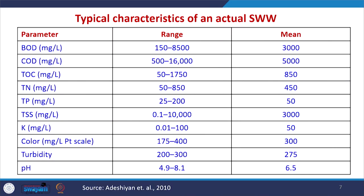The typical characteristics of slaughterhouse wastewater include: BOD in the range of 150 to 8500 mg/L; COD in the range of 500 to 16,000 with an average of 5000; TOC in the range of 50 to 750; total nitrogen 50 to 850; total phosphorus 25 to 200. Parameters such as TSS, potassium, color, turbidity, and pH also vary and are all important for understanding how treatment must be carried out.